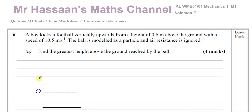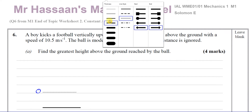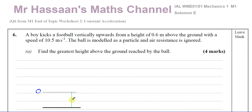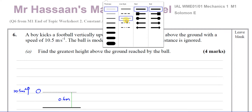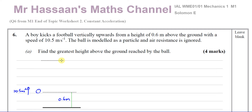O is 0.6 meters above the ground, so that distance between there and the ground is 0.6 meters — a vertical distance. The ball is kicked with an initial speed of 10.5 meters per second upwards. It's going to go up and reach its maximum height — I'll call that point A. When the velocity becomes 0, it comes to instantaneous rest and then falls down again.